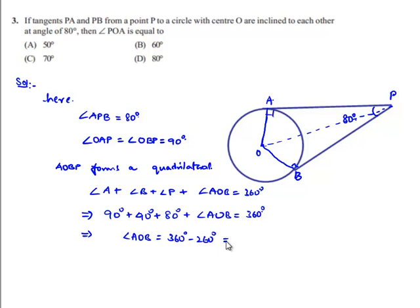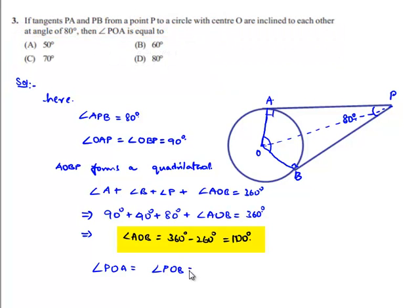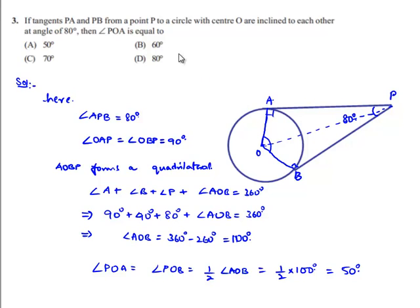Therefore angle AOB = 360° − 260° = 100°. Since PA and PB are tangents to the circle with center O, OP bisects angle AOB, so angle POA = angle POB = half of angle AOB = 100°/2 = 50°. Therefore angle POA = 50° and option A is correct.